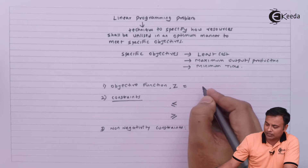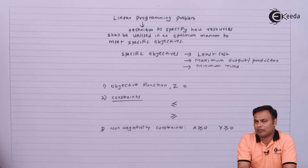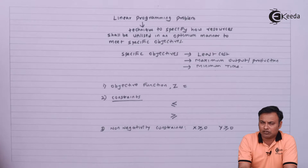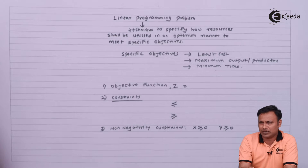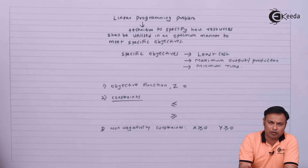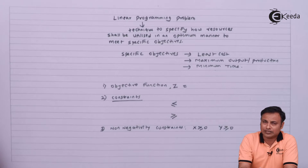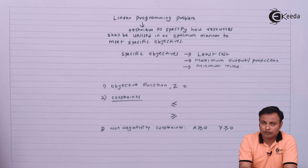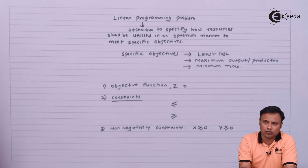So for every linear programming problem we have an objective function defined in terms of x and y, there will be a minimum of two to three constraints in every problem, and lastly we note down the non-negativity constraints. Now the next part is how this linear programming problem is applied — which are the areas where I can use LPP as a tool to solve my problem.